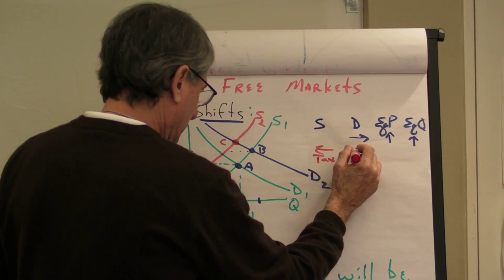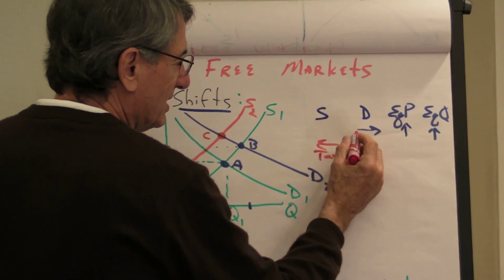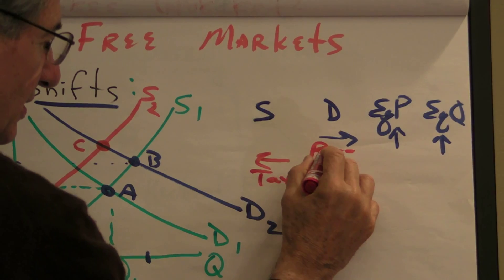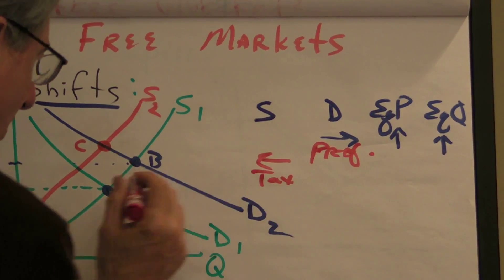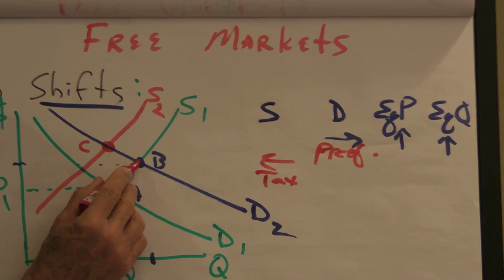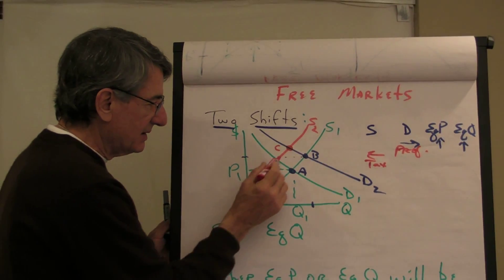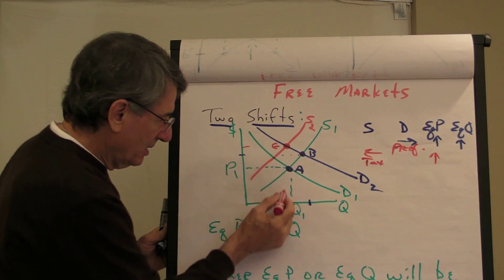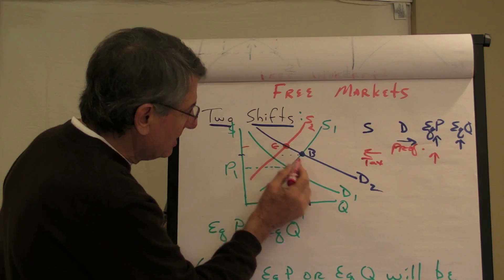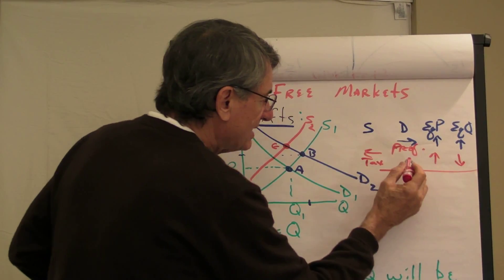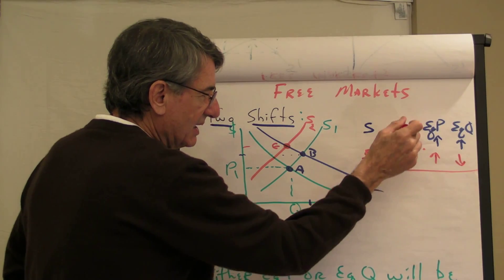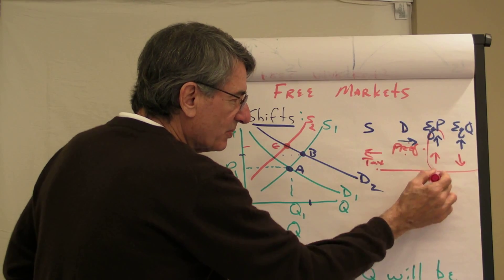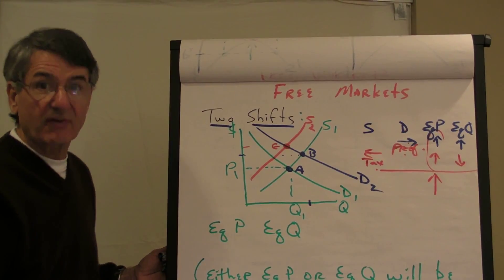Supply decreases, demand increased because, what did we say? Income, taste and preference, I don't remember what the reason was. Preferences. Preferences. Okay. Now, how does equilibrium C compare to equilibrium B in terms of price? Well, the price is going up and the quantity is going, oh, quantity is going to decrease compared to B. So, overall, can we say, we say that supply decreases because of a tax, demand increases because of preferences. Equilibrium price, both forces are pushing price up, so price is definitely going to go up.